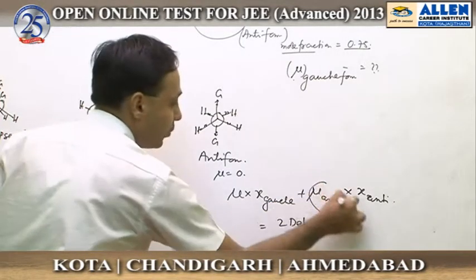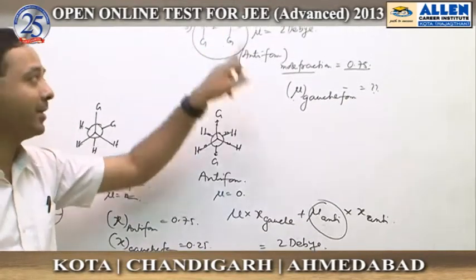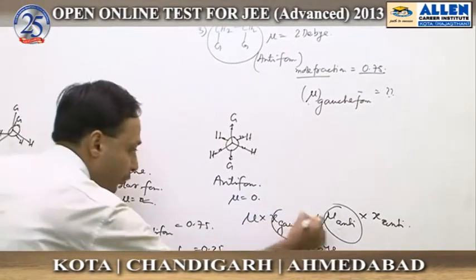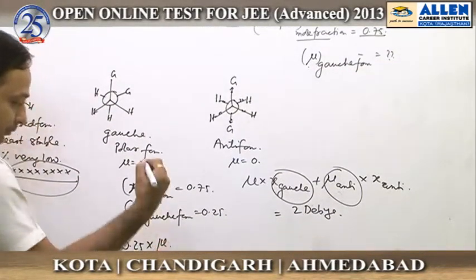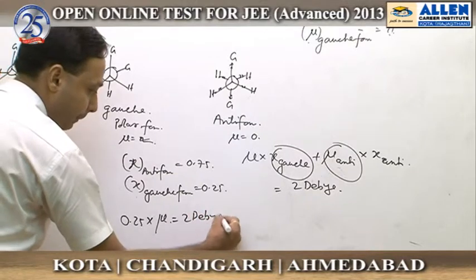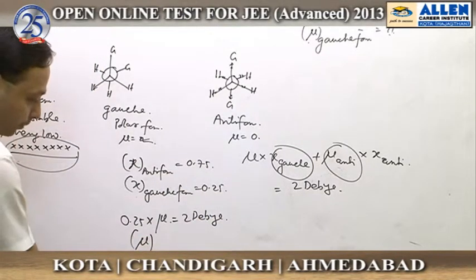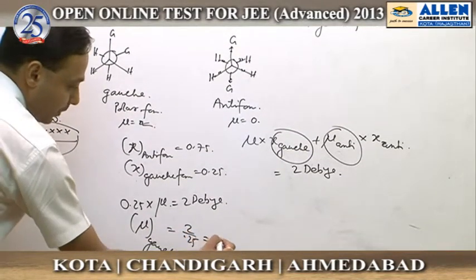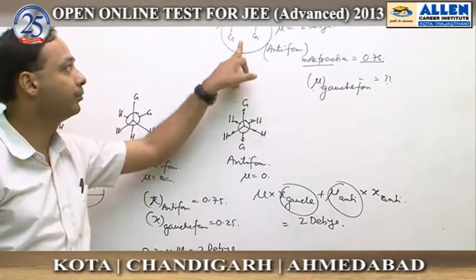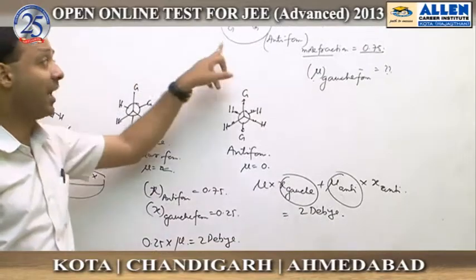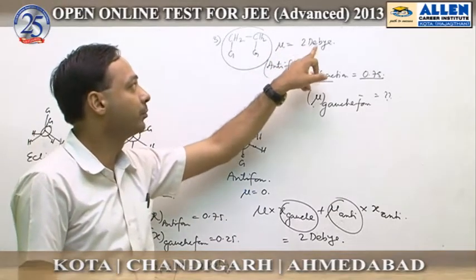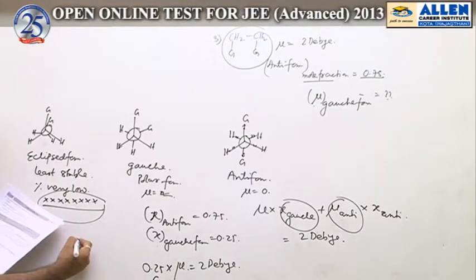Since anti-form mu is 0, the overall dipole moment arises entirely from the gauche form. With the gauche form mole fraction being 0.25, we can write: 0.25 × mu(gauche) = 2 Debye. Therefore, mu of gauche form = 8 Debye. So if this molecule existed entirely in gauche form, its dipole moment would be 8 Debye, but since only 25% exists in gauche form, the observed dipole moment is 2 Debye. The answer is 8 Debye.